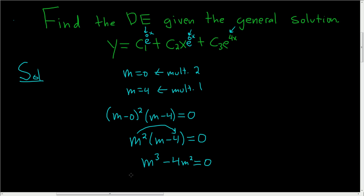And so finally, we can write the final answer down. Because there is a 3 here, we get y triple prime minus 4, and there's a 2 here, so we get y double prime, and this is equal to 0. That's it.